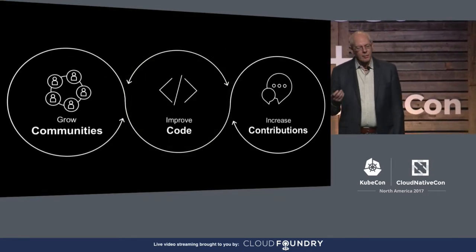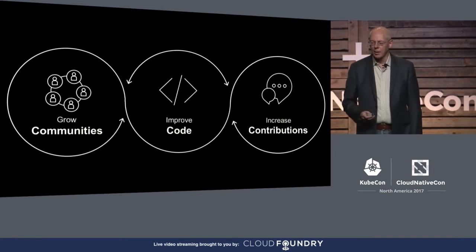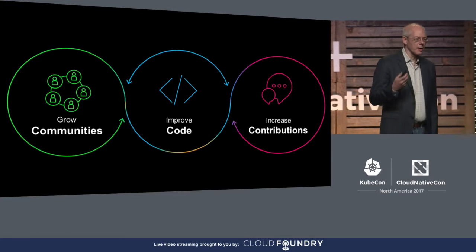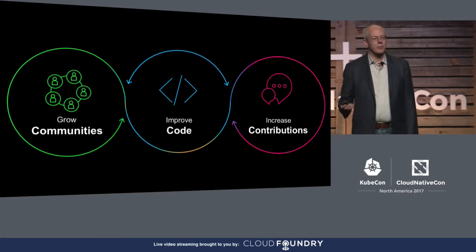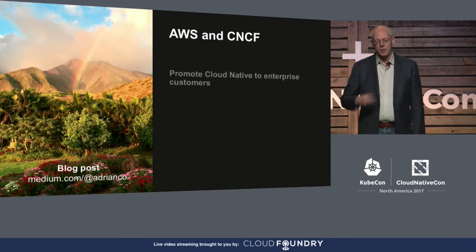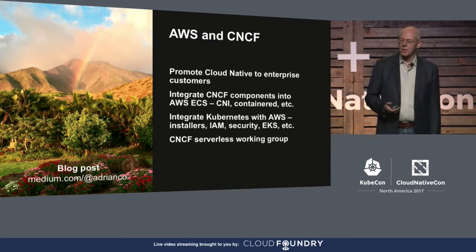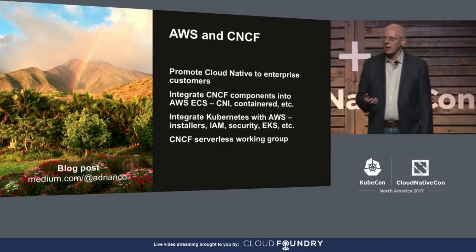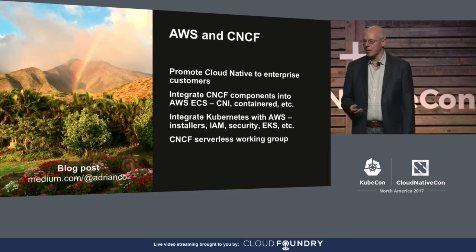The open source team at AWS has really got three things we're working on: growing communities — things like joining CNCF are part of that — improving the code, and increasing the contributions that AWS and Amazon make into open source projects as well as things from the community. AWS joined CNCF last August, and we're jointly promoting cloud native to enterprise customers, which is the goal of the whole CNCF.